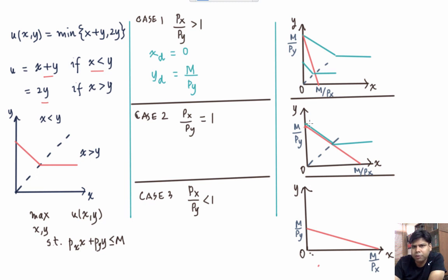So that means that there are multiple solutions to the consumer's problem, and any xd, yd such that it lies on the budget line and it lies in the region above the 45 degree line will be the solution. So this is how you're going to write it.